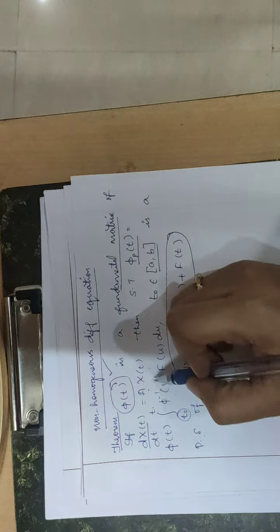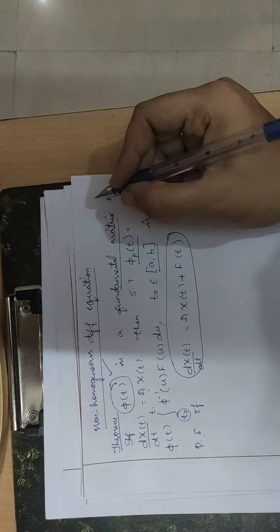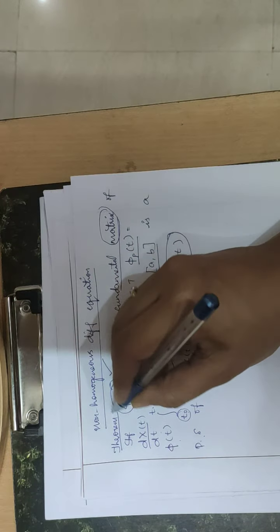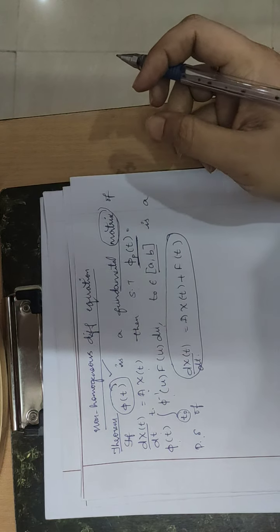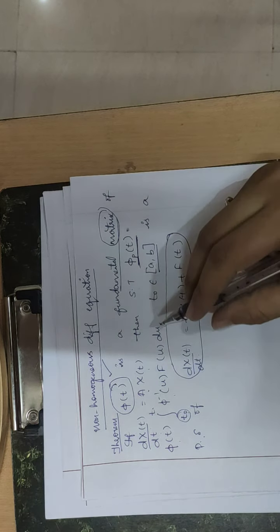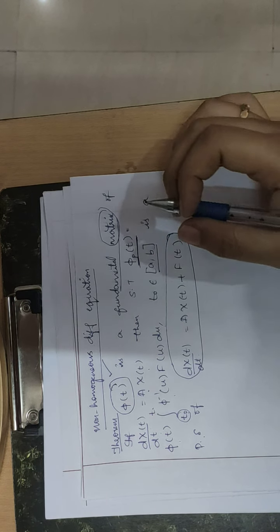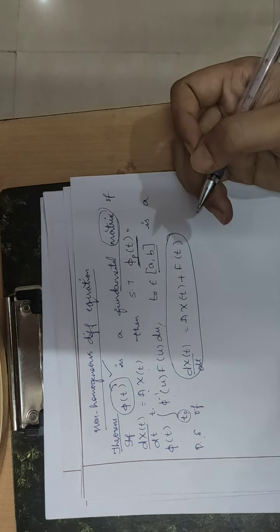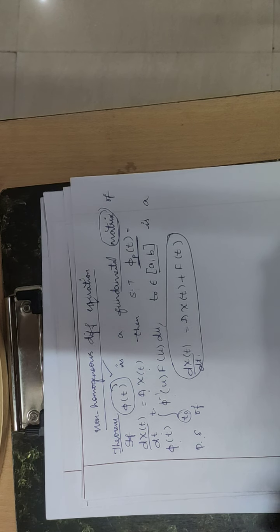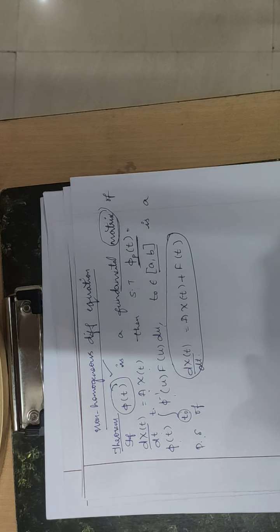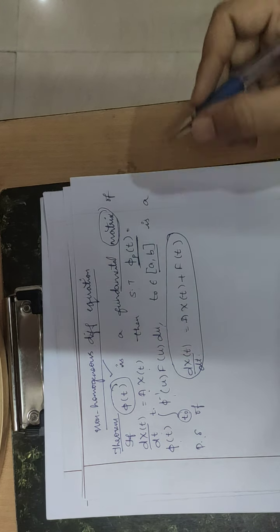This phi_p(t) is a particular solution of the non-homogeneous differential equation. The phi(t) is the fundamental matrix written from the general solution in matrix form. Just as in solving non-homogeneous differential equations we find particular integral and complementary function, we will do the same in matrix form.